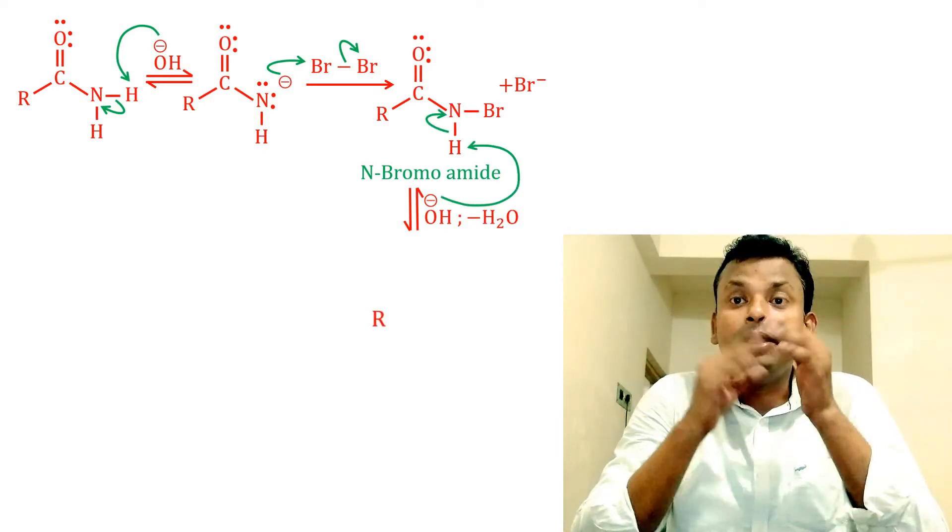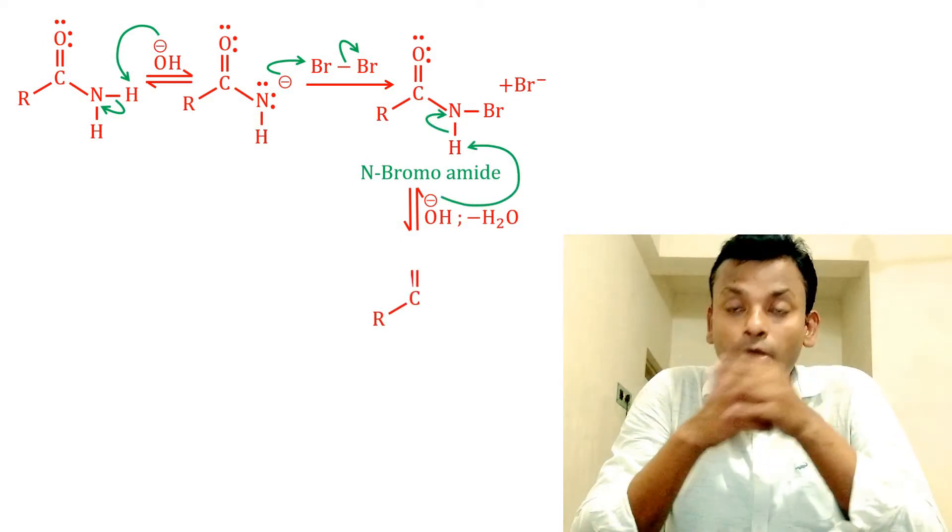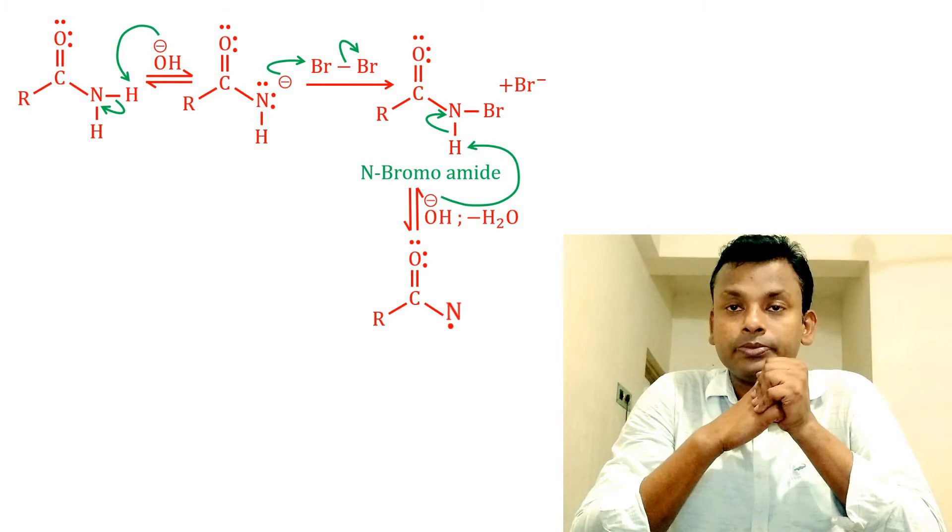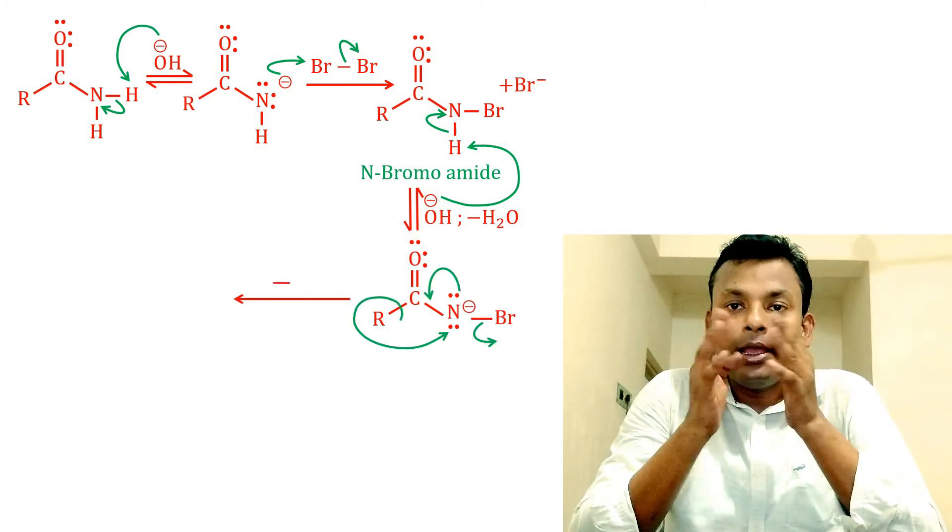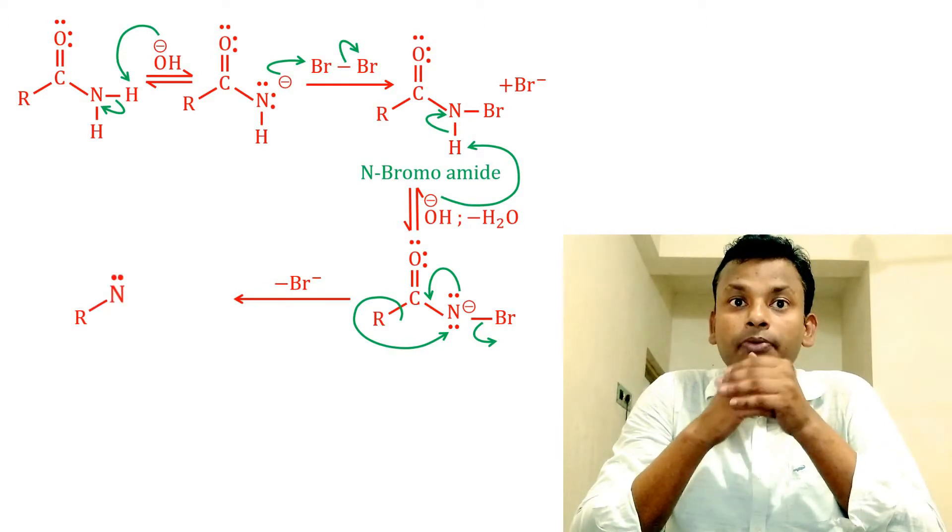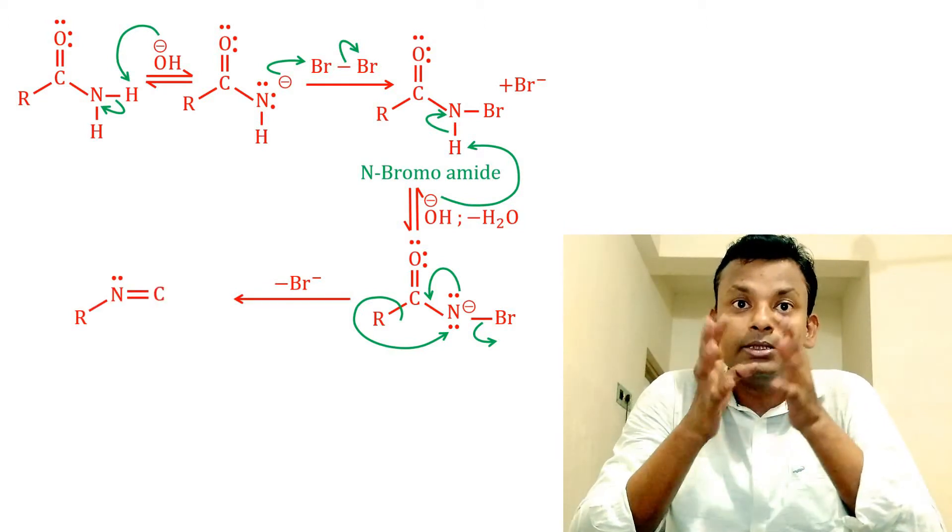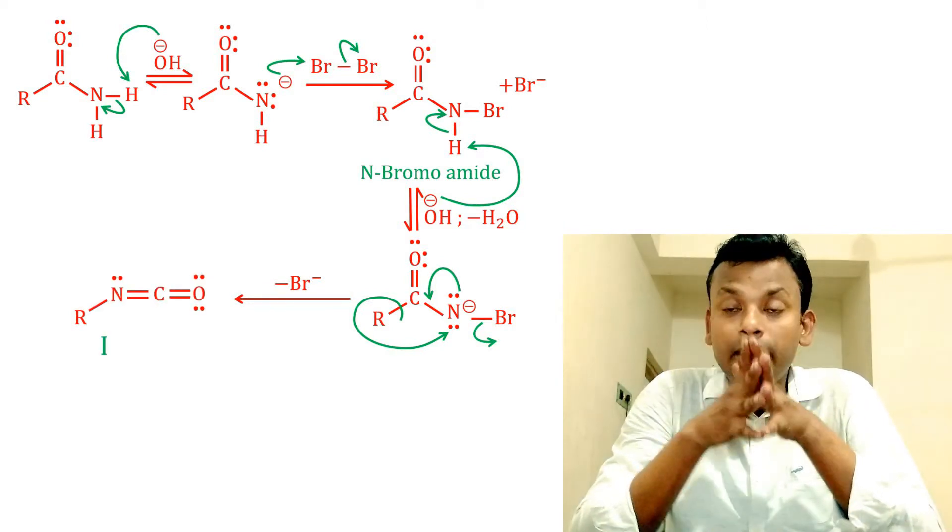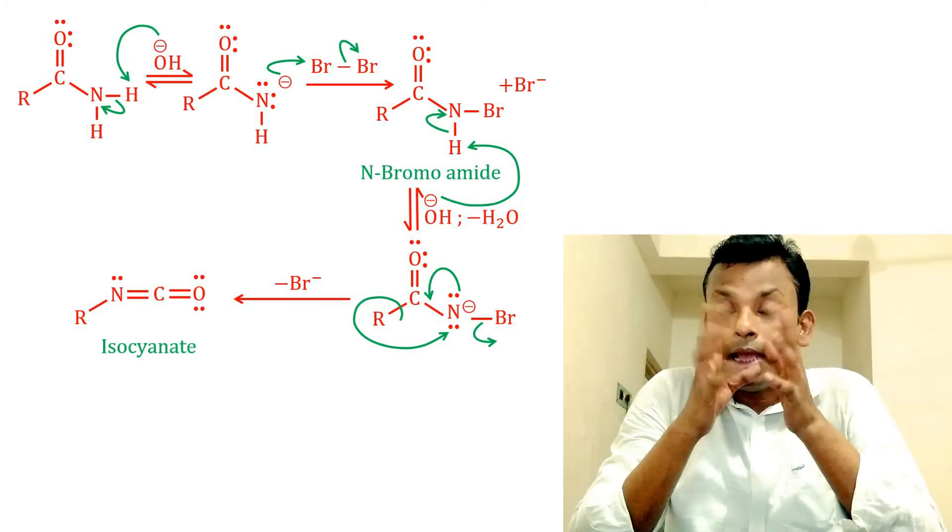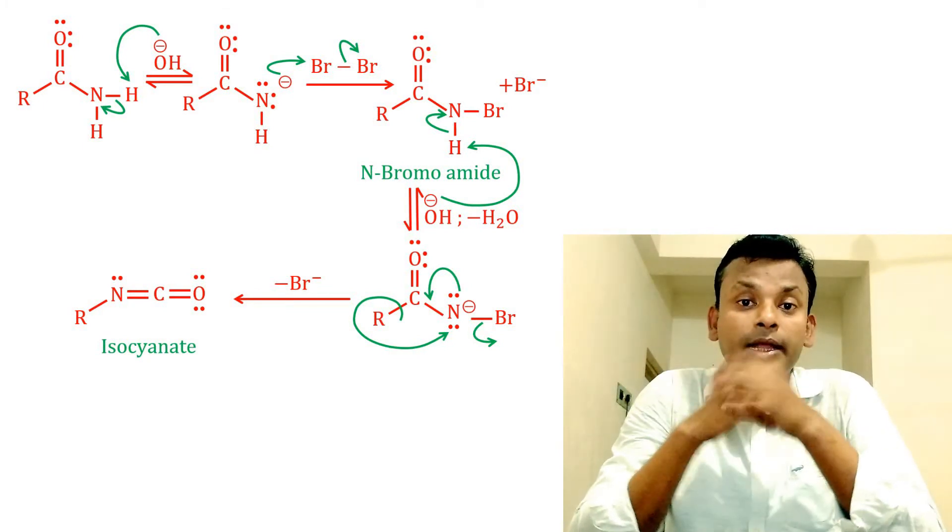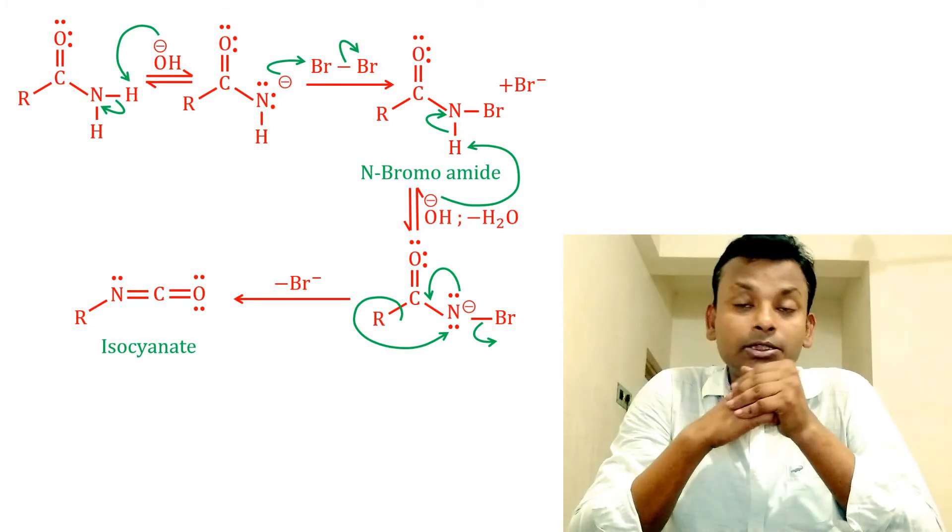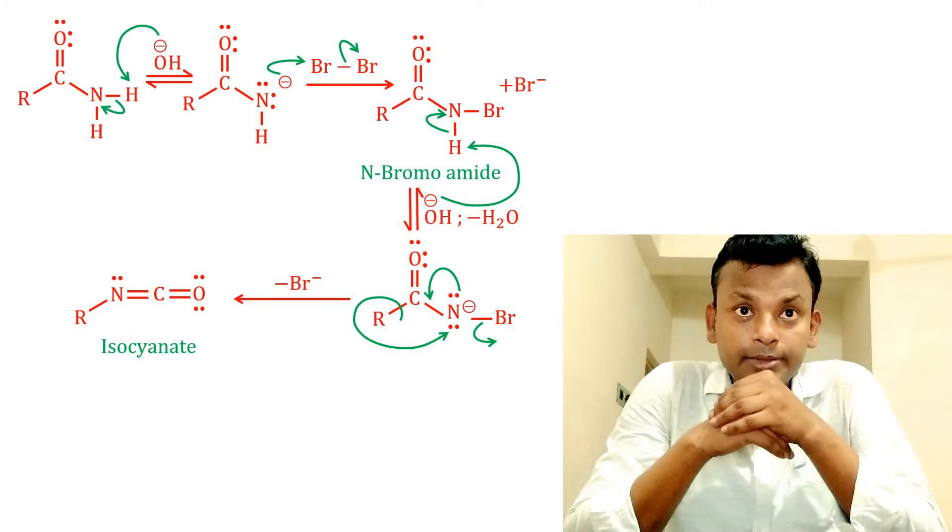And the R group migrates to the nitrogen and bromide ion departs. This process forms an isocyanate. Means here bromide is removed and R group migrates to nitrogen, forming isocyanate. In the rearrangement.